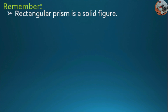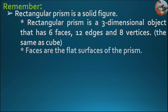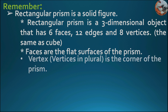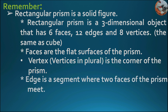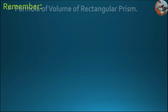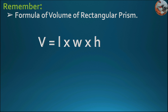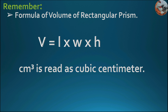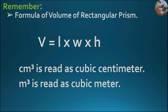A rectangular prism is a solid, three-dimensional object with 6 faces, 12 edges, and 8 vertices. Faces are flat surfaces; a vertex is the corner; an edge is a segment where two faces meet. A three-dimensional figure consists of length, width, and height. The formula for the volume of a rectangular prism is V = L × W × H. Cubic centimeter is read as cubic centimeter; cubic meter is read as cubic meter.